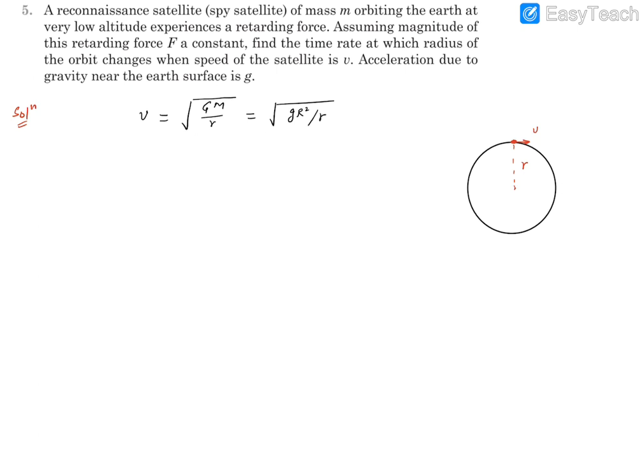The rate of change of speed is going to be the tangential acceleration or retardation, which is F by m. This is going to be the rate at which the speed changes. Now we can find the rate of change of speed. The rate of change of speed is going to be equal to gR² outside.